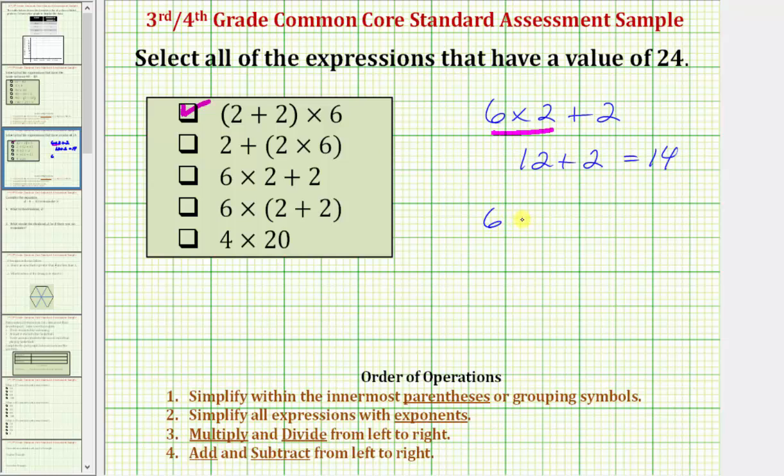For our next expression, we do have parenthesis again. So we simplify inside the parenthesis first. So we want to find this sum, two plus two is equal to four. So this expression simplifies to six times four, which equals 24, which means we are going to check this box. This expression does have a value of 24.